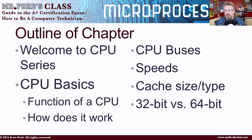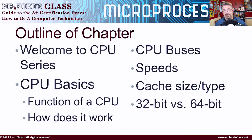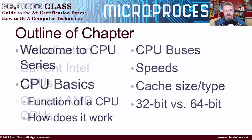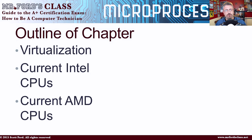Then we'll have a video just on the buses that you find within the CPU. We'll take a look at speeds — how speeds are calculated, what we're talking about when we're talking about speeds and CPUs. Then we'll take a look at the cache, both the size and the types of cache. Then we'll take a look at 32 versus 64-bit computing. Then we'll take a look at virtualization, followed by a look at the current Intel CPUs.